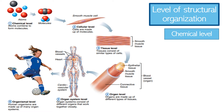This brings us to level number two: the cellular level. The level of structural organization starts from the chemical level as the first step. Then we move on to the cellular level, where cells are made up of molecules. All cells have some common structures and functions, but individual cells vary in size, shape, and their particular role in the body. Simple living creatures have single cells, while complex organisms such as human beings are multi-cellular.